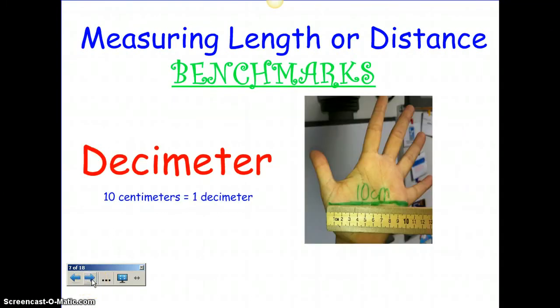Then we have a decimeter. If you open up your hand, the distance across your palm from one end to the other is about a decimeter. There are ten centimeters in one decimeter. When you think about the word decimeter, it has 'deci' in it, which means ten.